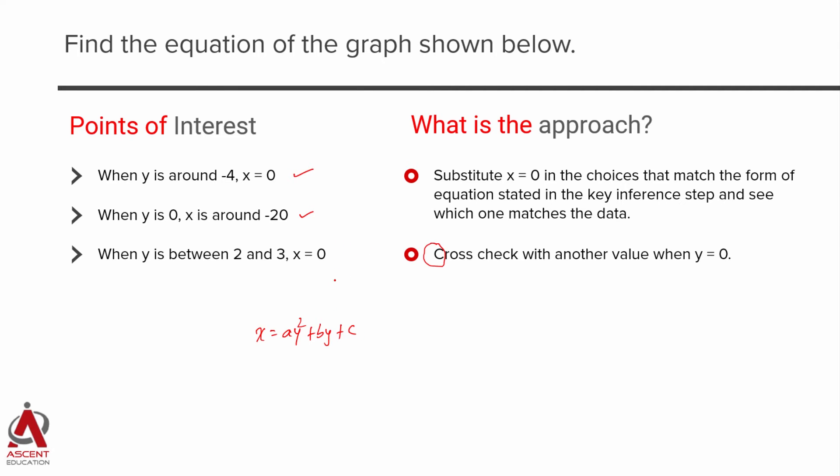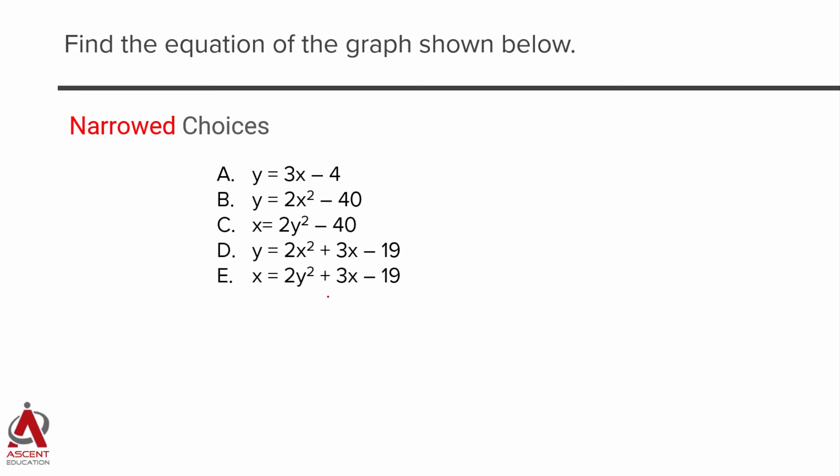You can check with the third one also but it is not needed. Two of these should be good enough for us. So this is the approach we are going to take. Look at answer choices. Again we will start by narrowing down answer choices. Look at the answer choices which match our criteria, x is equal to ay square plus by plus c. Two answer choices match this, one is C and the second is E. A obviously is ruled out, it is a linear equation. B and D are of the form y is equal to ax square, so those are also ruled out. So we need to check out whether C matches those two points or whether E matches those two points.